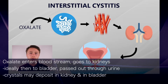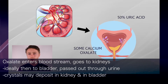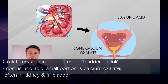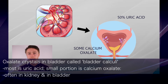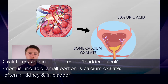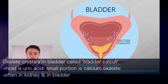You can have oxalate crystals which become deposited in the kidney, but you can also have oxalate crystals which actually deposit in the bladder as well, and these are called bladder calculi. Most bladder calculi are made up of uric acid, but there is also a small portion made up of calcium oxalate. So calcium oxalate is not only implicated in kidney stones — those oxalate crystals can actually make their way to other parts of the urinary tract.